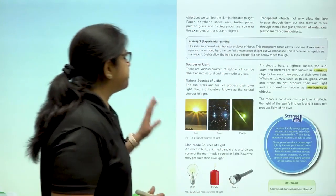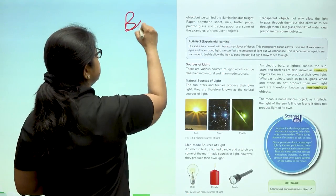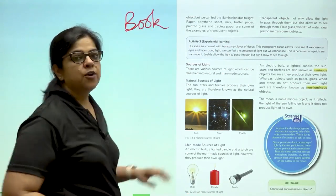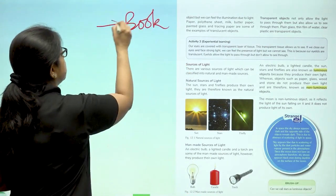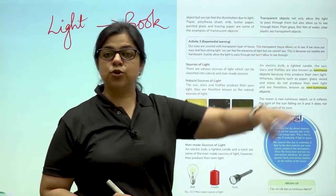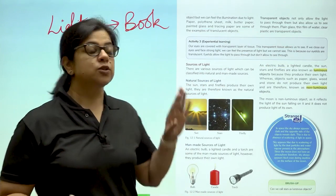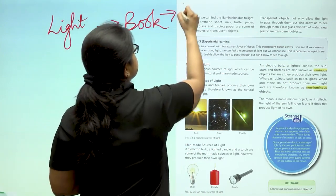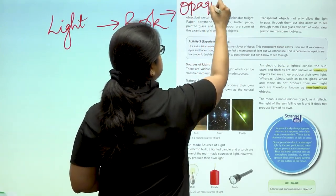So for example, we talk about a book. When light falls on a book, what do you think will happen? Will the book allow the light to pass through it? No. So what is a book? A book is an opaque object.